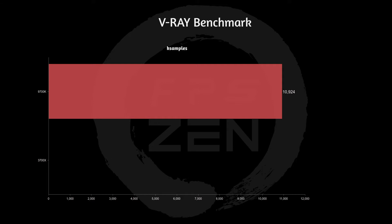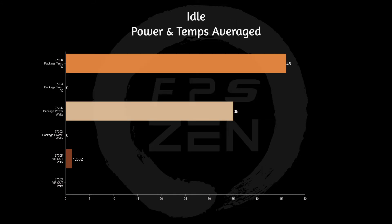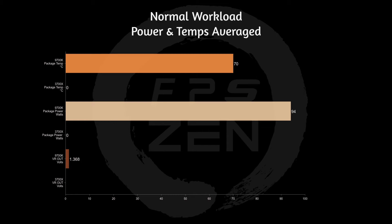Now for power and temps. At idle, average temperature was 46 degrees Celsius, package power was 35 watts, and voltage was 1.382V. For ninth-gen Intel, we want to keep voltage under 1.4V, so this is fine. Idle actually pulls the most voltage since it's drawing the fewest watts.